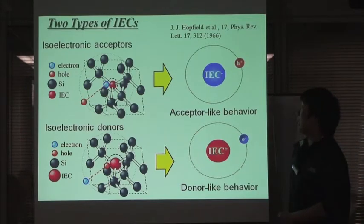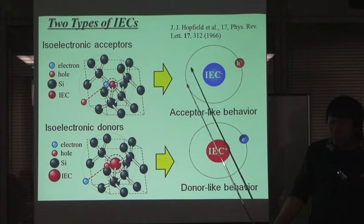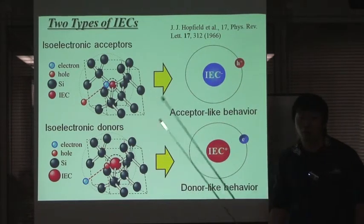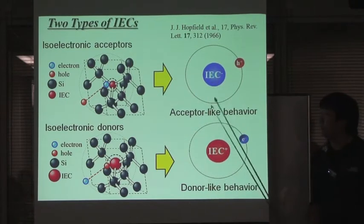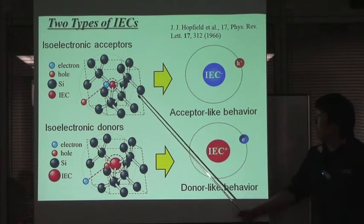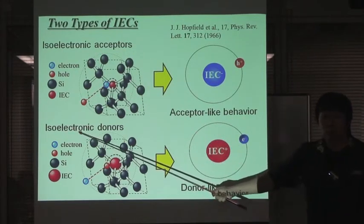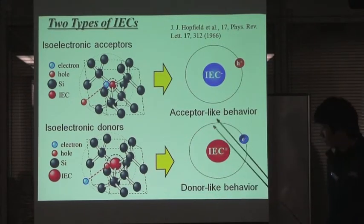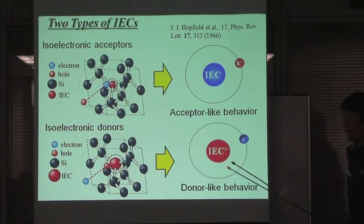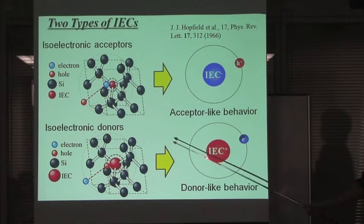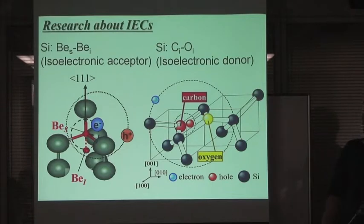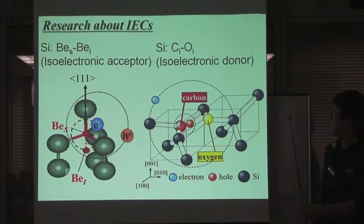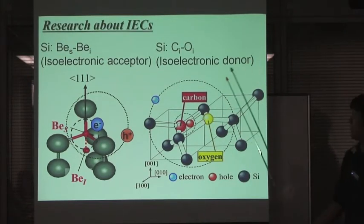Isoelectronic centers have two types. One is an isoelectronic acceptor. The isoelectronic acceptor catches an electron first due to the strain field, and the hole is caught by the Coulomb potential of the electron. So this center has acceptor-like behavior. For the isoelectronic donor, the strain field catches the hole first, then the electron is trapped by the Coulomb potential of the hole, so this center has donor-like behavior. We research the substitutional-interstitial barium pairs in silicon as the isoelectronic acceptor, and interstitial carbon-interstitial oxygen in silicon as the isoelectronic donor.